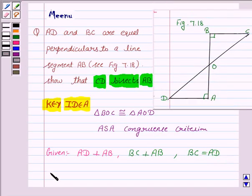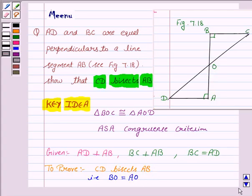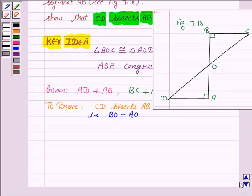And we have to prove that CD bisects AB, that is BO is equal to AO. Let us now start the solution.